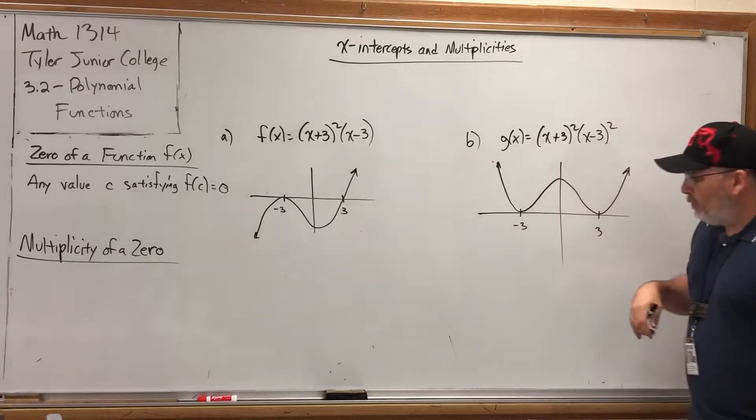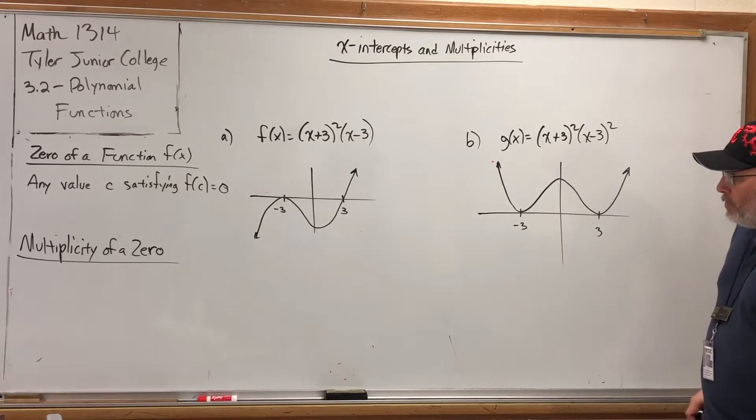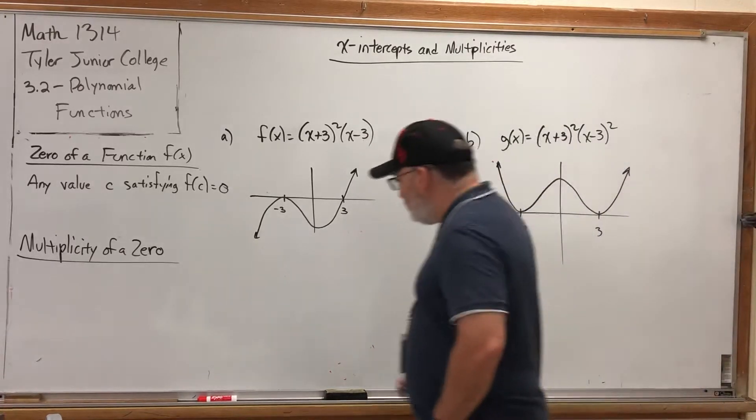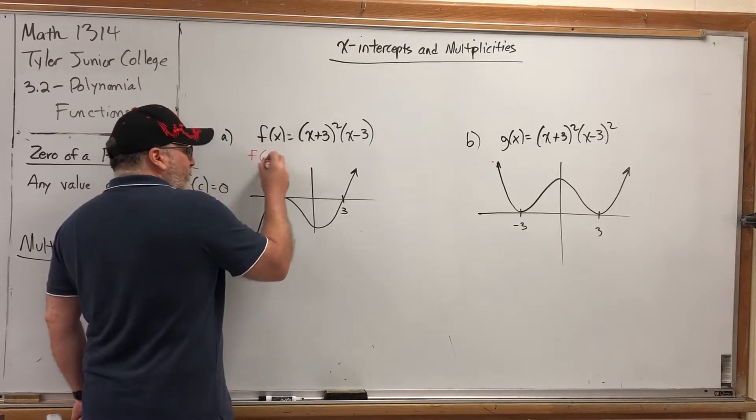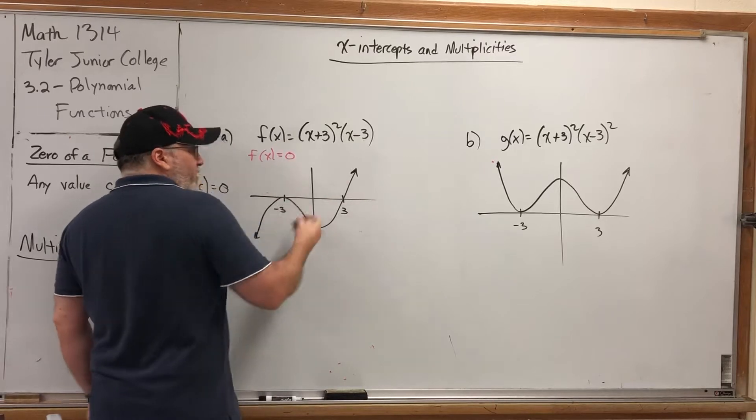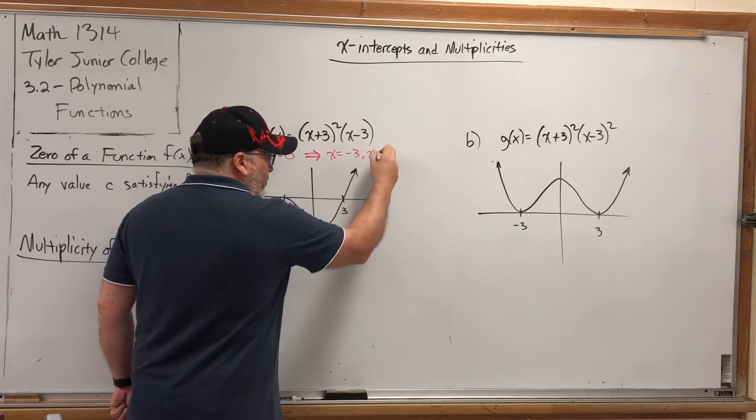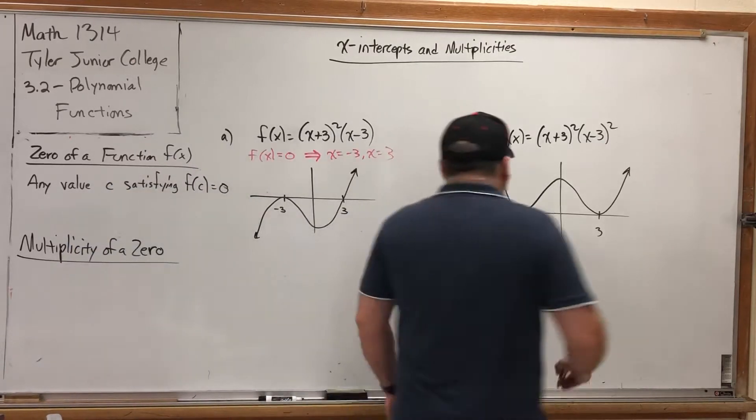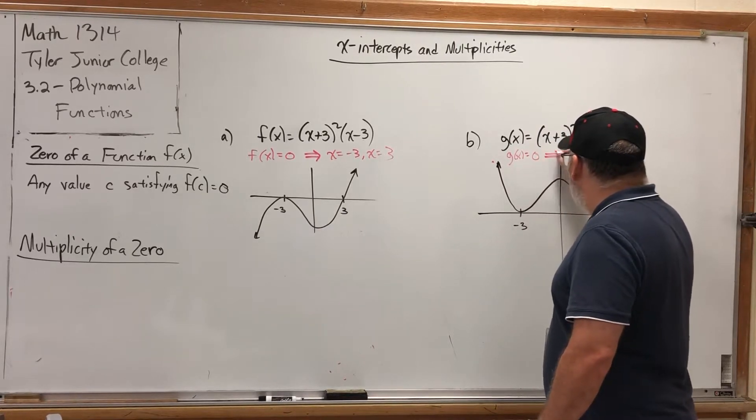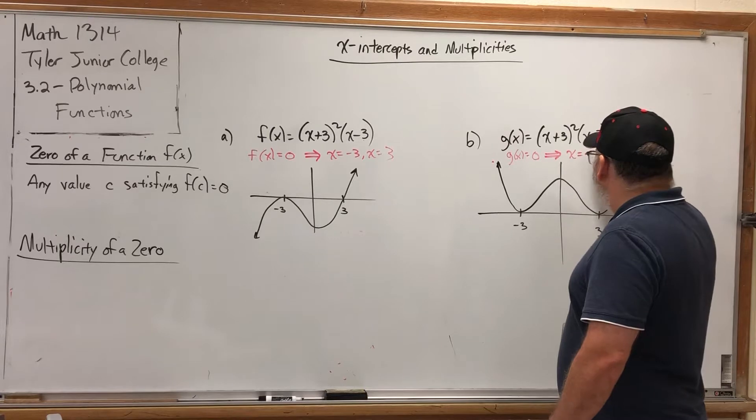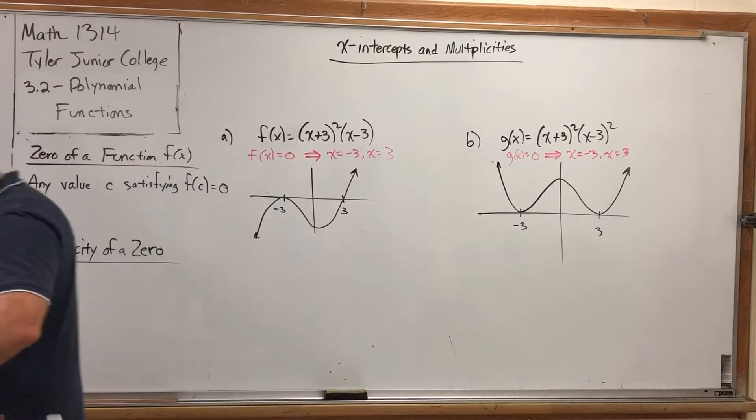And this one, if multiplied out, was X to the fourth power minus 18X to the second power plus 81. But the dilemma we ran into at the end of the last video was when we found the X-Intercepts by putting each function equal to zero, putting this function equal to zero implies that X equals negative 3 and X equals 3, so those were our X-Intercepts. And the same thing over here. Putting G of X equal to zero implies that X equals negative 3 and X equals positive 3.